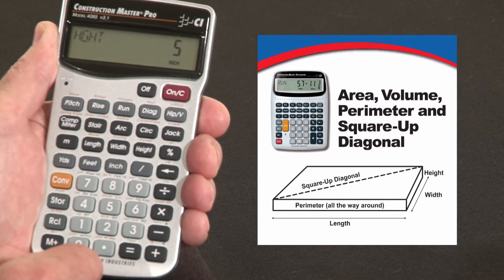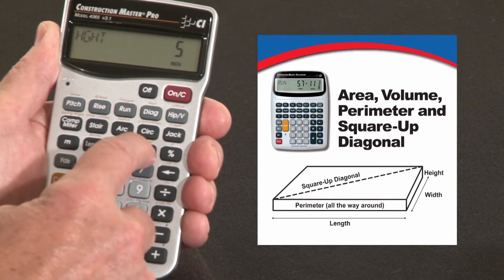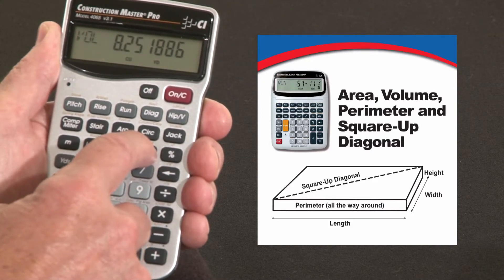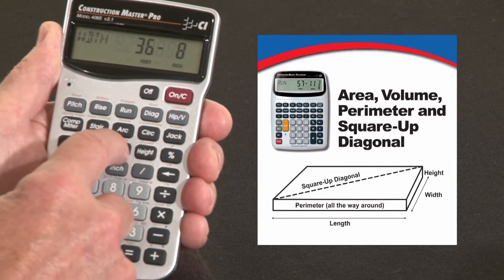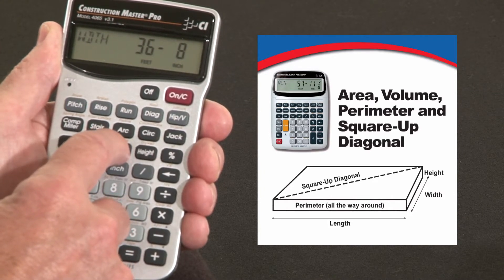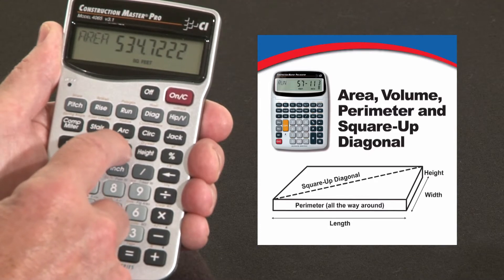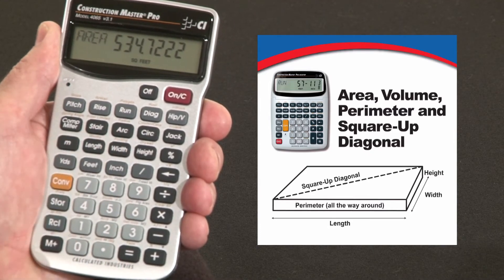So now it's all set to give us a whole series of answers. You can go back to the height key and it gives us our volume, 8.25 cubic yards. I can come back to the width key. It confirms the width that we entered, 36 feet 8. Second press gives me the surface area, 534 square feet.